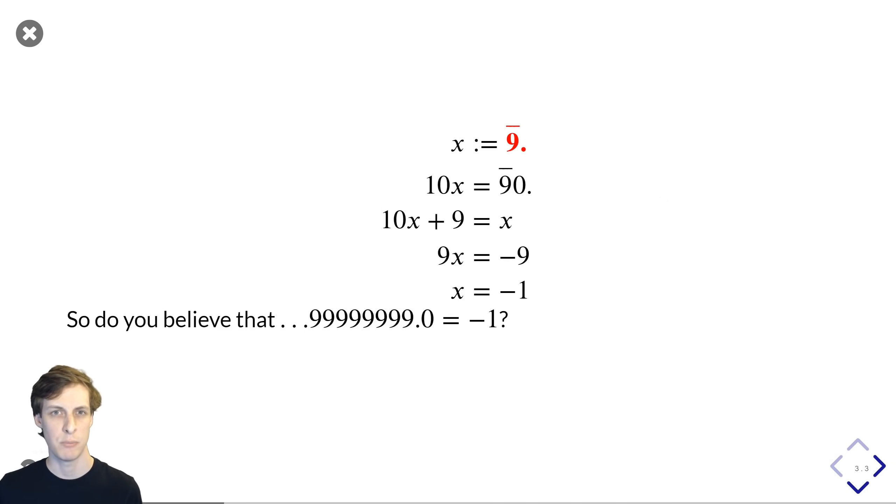Instead of looking at 0.99 repeating, let's look at a very similar expression. Let's suppose that a number 9 repeating and then the point exists. So I'm thinking here as the decimal point with 9s extending out on the left side of it instead of on the right side of it.